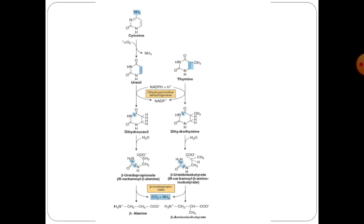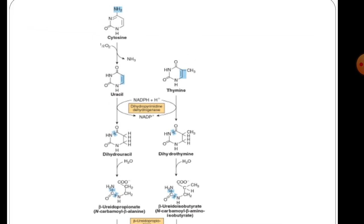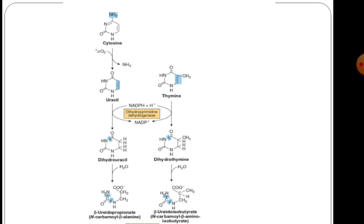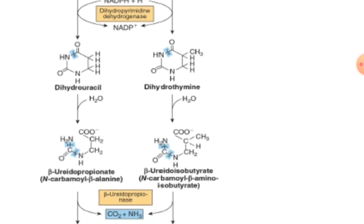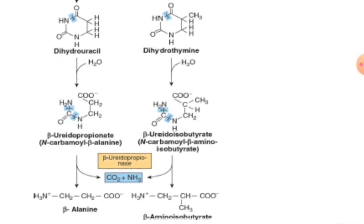This is the benign fate of pyrimidine nucleotides. Cytosine becomes uracil, and thymine becomes dihydrothymine, as well as uracil becomes dihydrouracil, in the presence of dihydropyrimidine dehydrogenase. NADPH is used here.